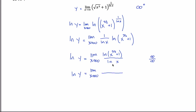So I apply L'Hôpital's rule by taking the derivative of the top and the derivative of the bottom. This is a little challenging — it tests your Calc 1 knowledge more than Calc 2. The derivative of the bottom is straightforward: the derivative of natural log of x is just 1/x. The derivative of the top is harder and requires the chain rule. The derivative of ln of something is one divided by that something, so here it's 1 over (x to the 3/2 plus 1). Then by the chain rule, I multiply by the derivative of the inside: using the power rule on x to the 3/2, I bring down the 3/2, giving 3/2 · x to the 1/2. The derivative of the constant 1 is zero.